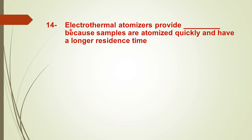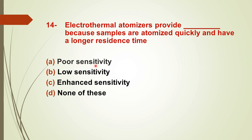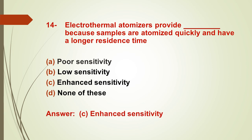Question number fourteen: electrothermal atomizers provide dash because samples are atomized quickly and have a longer residence time — options: A) poor sensitivity, B) low sensitivity, C) enhanced sensitivity, D) none of these. The right answer is C — enhanced sensitivity. Electrothermal atomizers provide enhanced sensitivity.